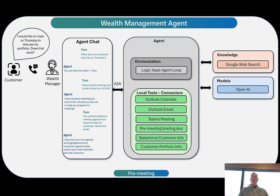There are two sides to this: a pre-meeting and a post-meeting. For the pre-meeting, we want to schedule a meeting by looking up availability in Outlook, send an email with a pre-meeting briefing document, book a Teams meeting, and access customer demographic information and portfolio information from Salesforce. To complement these tools, we're also going to leverage a Google web search to catch up on the latest news related to the different equities or holdings our customer has.